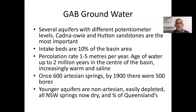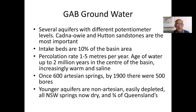There are several aquifers with different potentiometric levels. The Kadnawi and Hutton sandstones are the most important — we'll see those in sections later. Only 10% of the basin area at most are intake beds, and the percolation rate there is up to five metres per year locally. At one time there were something of the order of 600 artesian springs, and by 1900 there were 500 bores providing water for cattle stations across the inland.